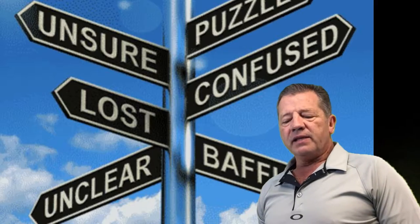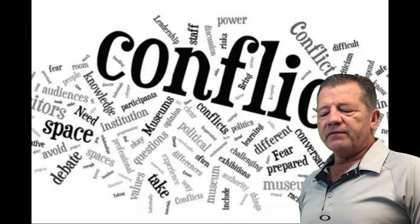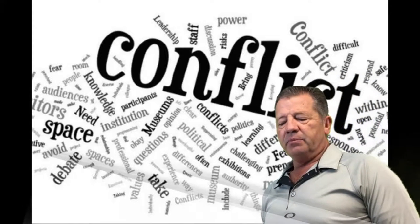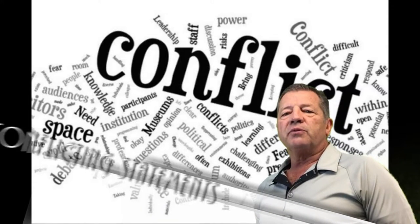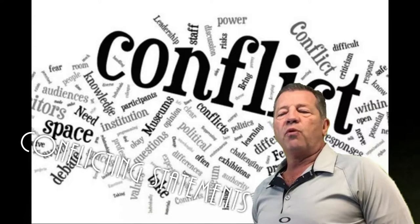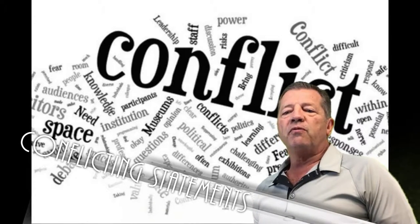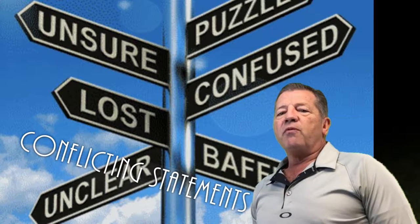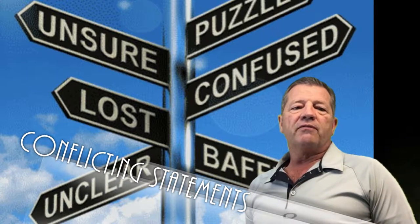Number one is inconsistent or conflicting statements within the body of the appraisal. Often, this is a result of a template with comments that conflict with the pre-printed statements, scope of work, or loaning conditions. Some appraisers add additional scope of work within their appraisal, and those scope of work requirements conflict with the pre-printed form.